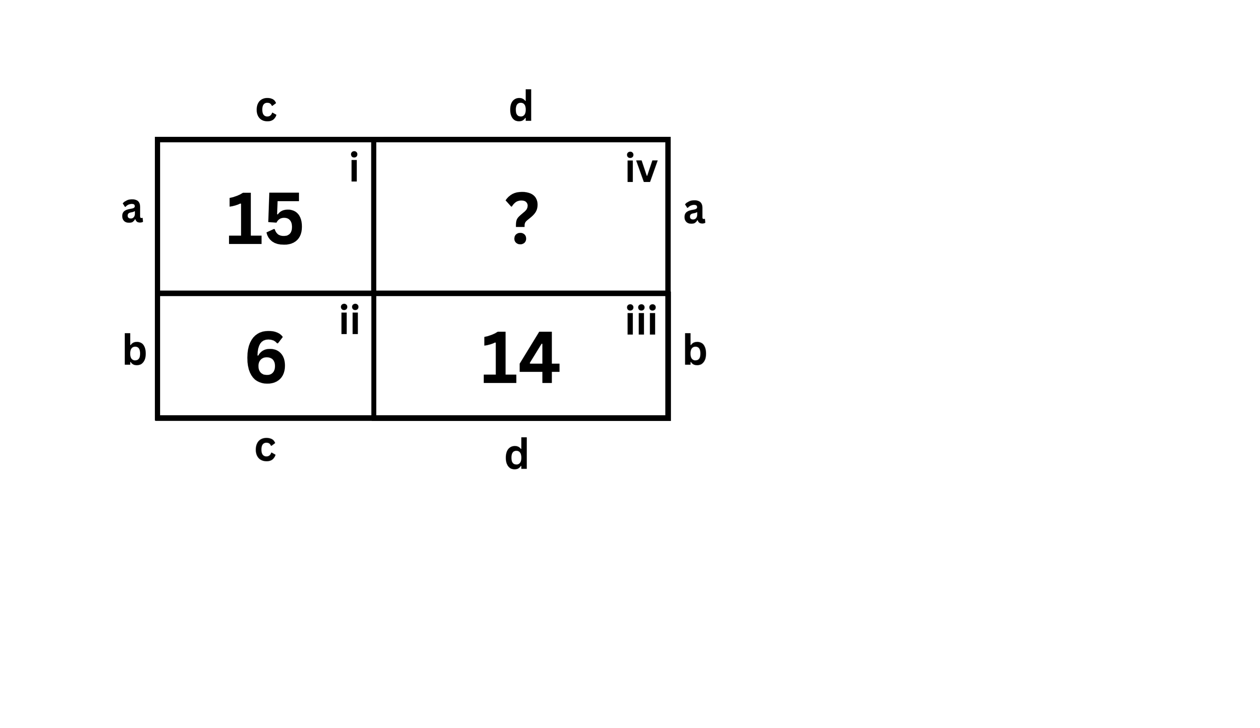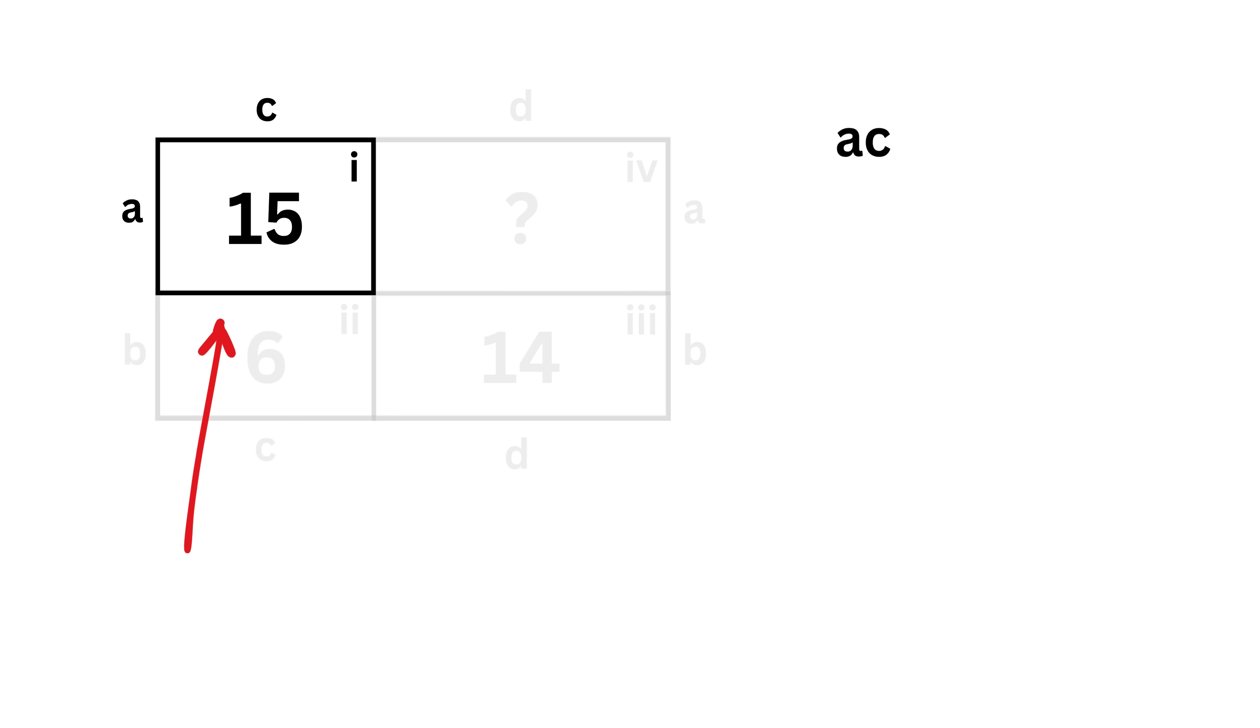After we are done with labeling side lengths, we've turned a confusing picture into a simple set of variables. So, now we should write the area of each rectangle as the product of its side lengths. For portion 1, or this rectangle, what will be its area? Yes, it will be A times C, because the side lengths of this rectangle are A and C. But area is given as 15, and thus we have AC equals 15.